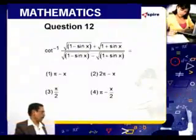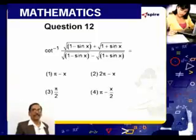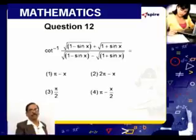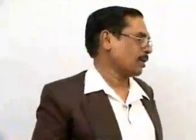Now we will go to question number 12. It is given to be cot inverse of a certain function. I will write it as tan inverse of the function where the denominator comes to the numerator and the numerator comes to the denominator, because tan function is easier to deal with than cot function.